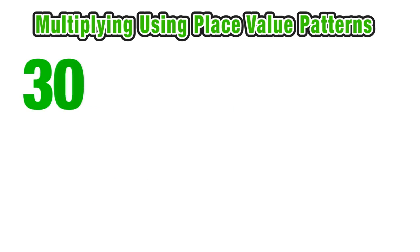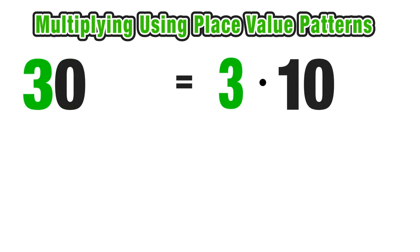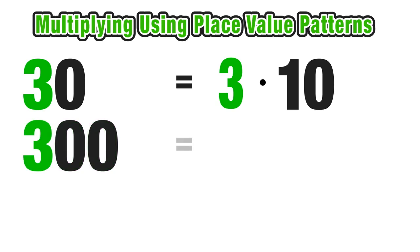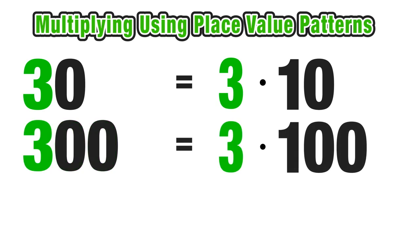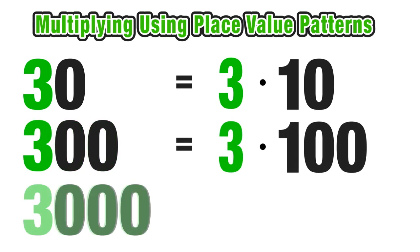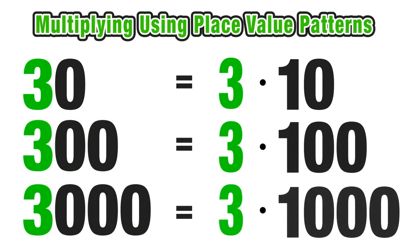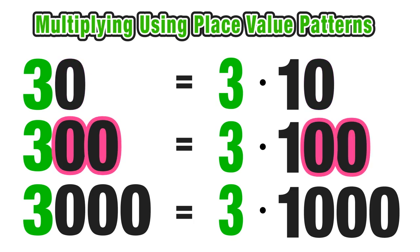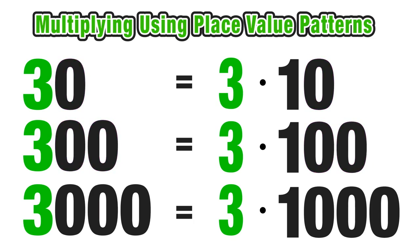We can extend our thinking to the idea of place values. 30 is a 3 with one zero digit, and we can think of it as 3 times 10. 300 is a 3 with two zero digits, and we can think of it as 3 times 100. So we can see how the place values — in this case the zero digits — correspond.